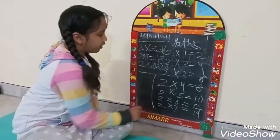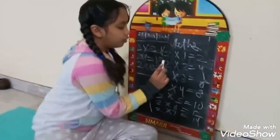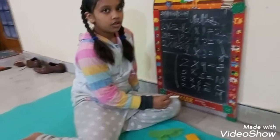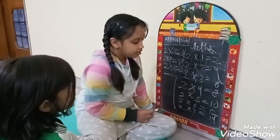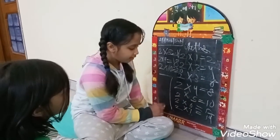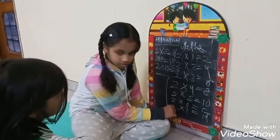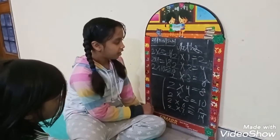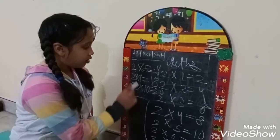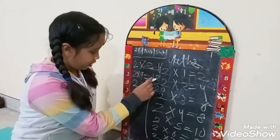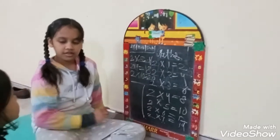Okay, so let's say this. Two one's are two. Two two's are four. Two three's are six. Two four's are eight. Two five's are ten. Two six's are twelve. Two sevens are fourteen. Two eights are sixteen. Two nine's are eighteen. Two ten's are twenty.